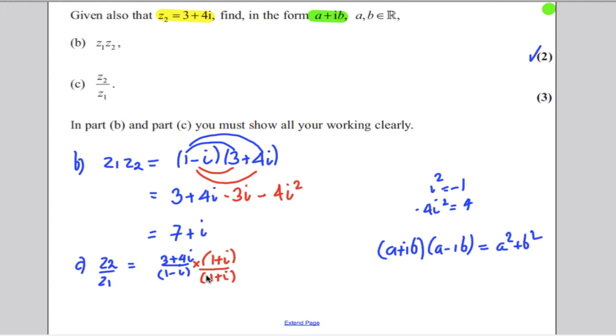So in this case here, a, the real part, is 1, and the number in front of i is also 1, so when we multiply that out on the bottom, we're going to get 2.